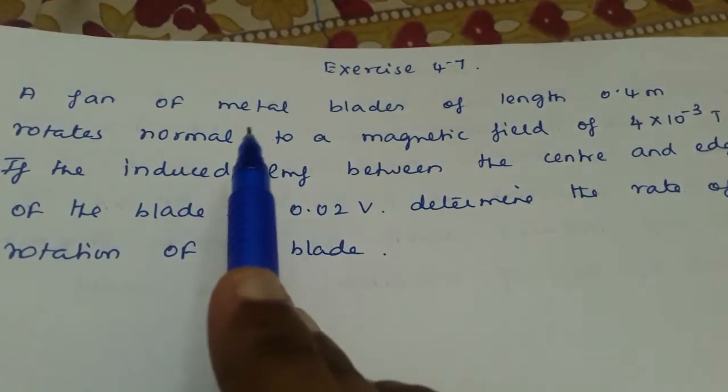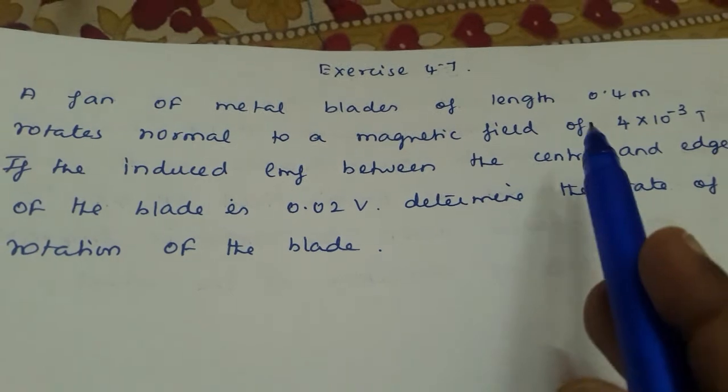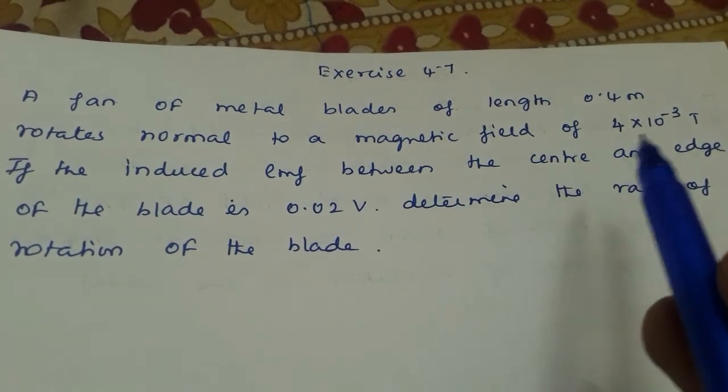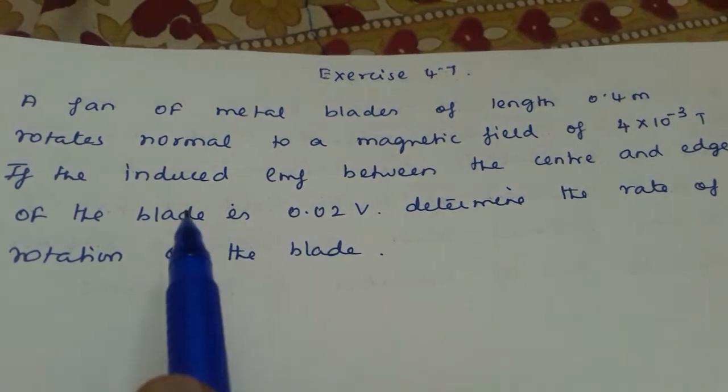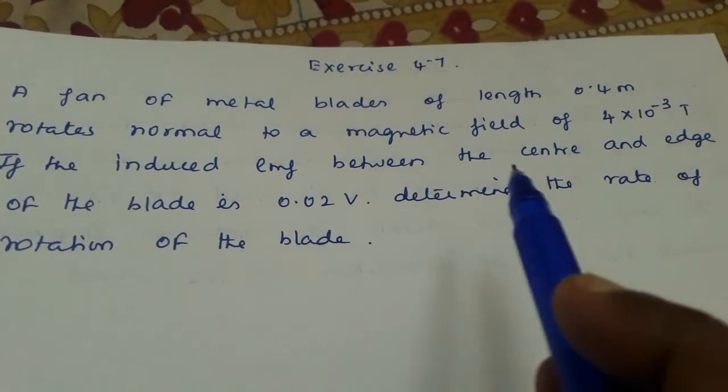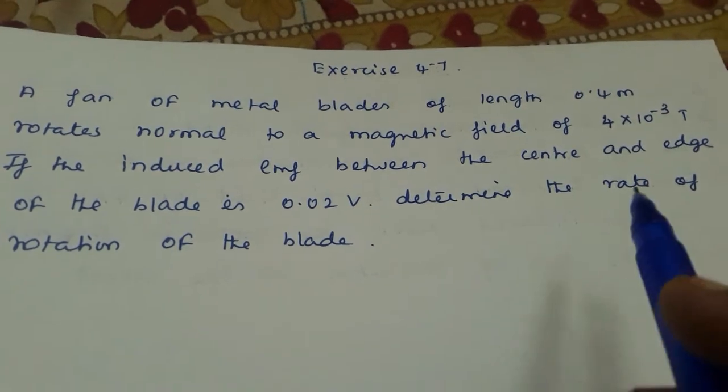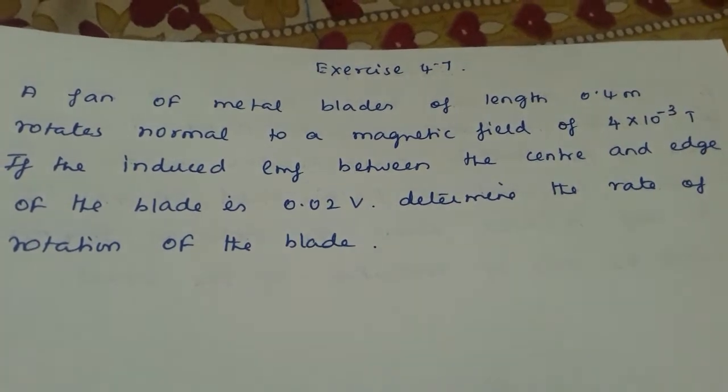Exercise 4.7: A fan of metal blades of length 0.4 meter rotates normal to a magnetic field of 4 into 10 raised to minus 3 tesla. If the induced EMF between the center and edge of the blade is 0.02 volt, determine the rate of rotation of the blade.